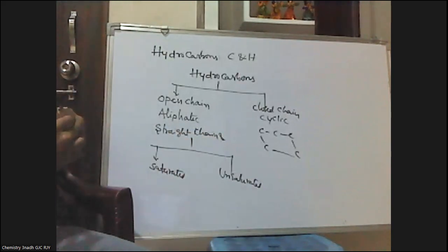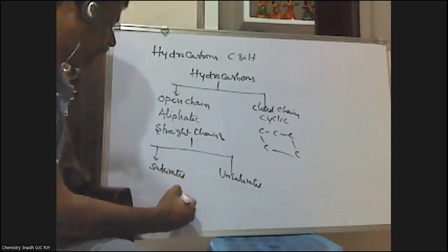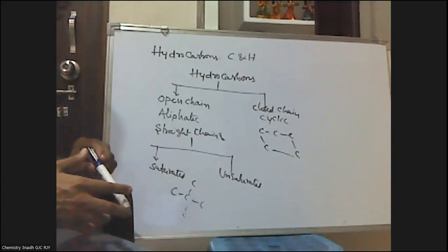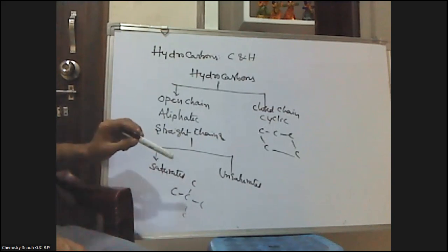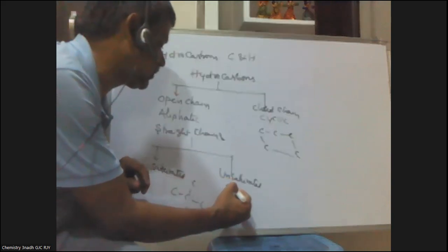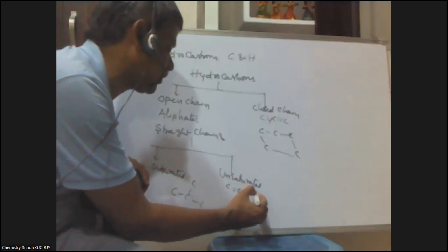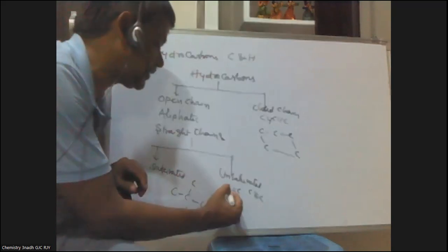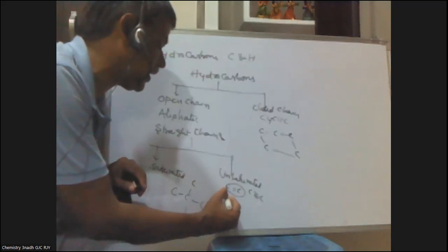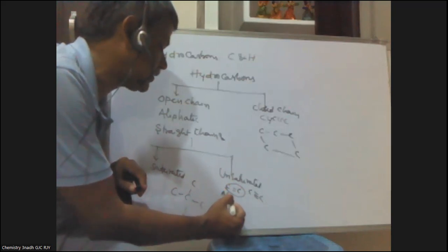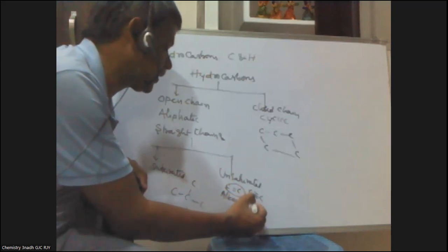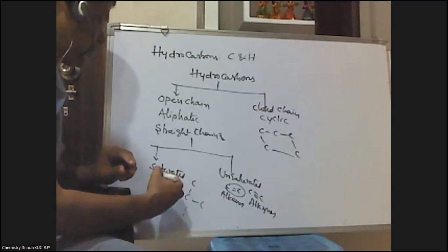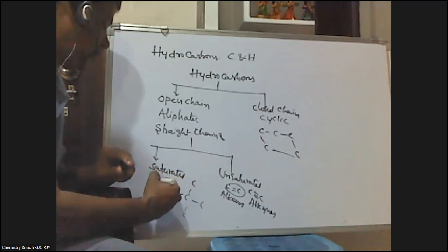Saturated means all four valences of carbon are filled with only carbon-carbon sigma bonds — those are called saturated compounds. If a compound contains at least one carbon-carbon double bond or carbon-carbon triple bond, those are called unsaturated compounds. The saturated open chain hydrocarbons are called alkanes.